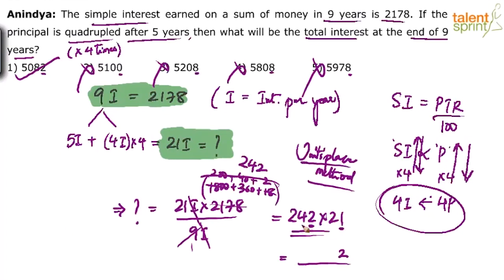242 into 21 is not difficult anyway. Split 21 as 20 plus 1. So 242 × 20 plus 242 × 1. 242 × 10 is 2420, so 242 × 20 is 4840. 4840 plus 242 is 5082. So the answer is 5082 even if you do the full calculation. But why waste time in the multiplication when you already know option 1 is the answer?